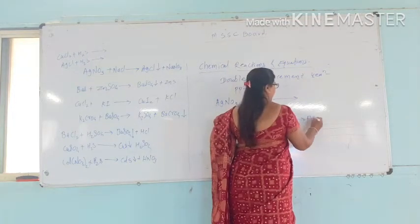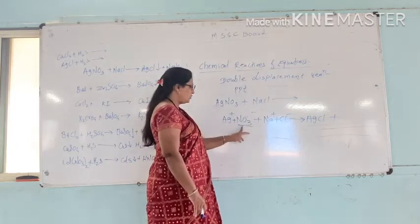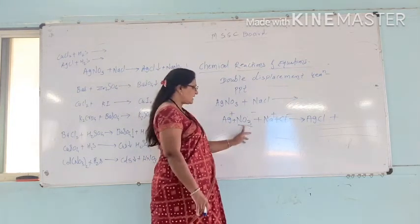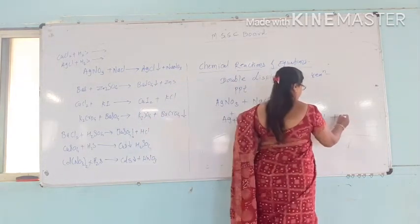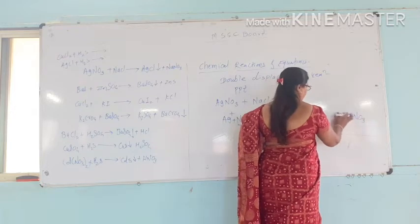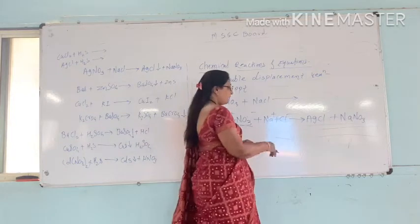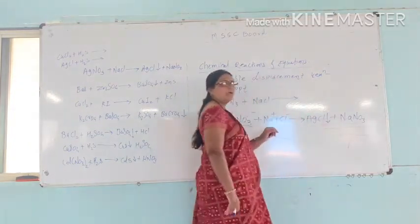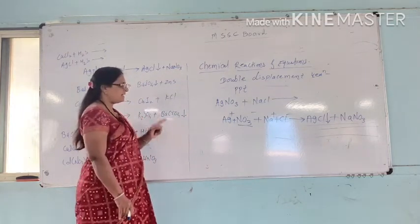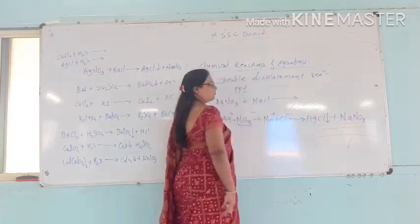After the exchange, we get AgCl and NaNO₃. The chloride pairs with silver, and the nitrate pairs with sodium. In this type of reaction, a PPT is formed — AgCl, silver chloride, forms a precipitate shown by a downward arrow.